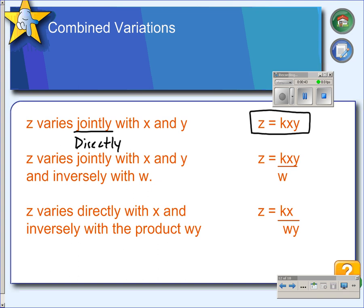Second statement, Z varies jointly with X and Y, so X and Y are multiplied by K, and inversely with W, so you can have an equation that is both direct and inverse at the same time.